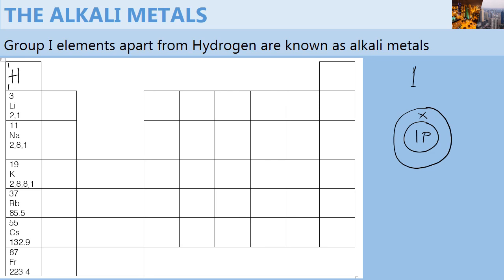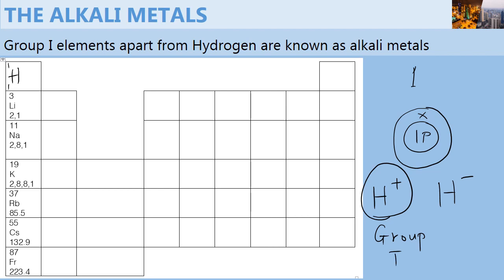Remember ion formation from the previous chapter. Hydrogen can form a hydrogen ion by losing 1 electron. Therefore, when it loses 1 electron, hydrogen behaves as a group 1 element.